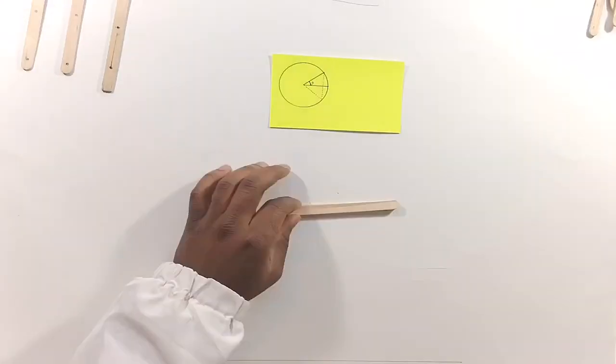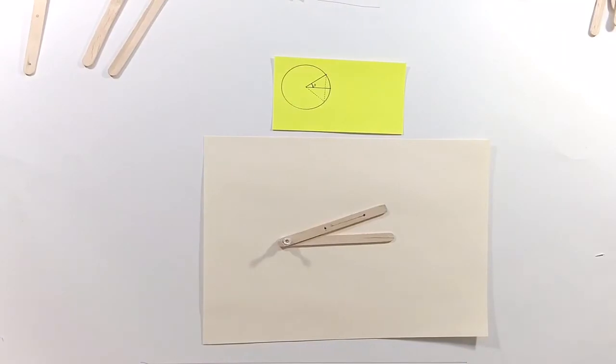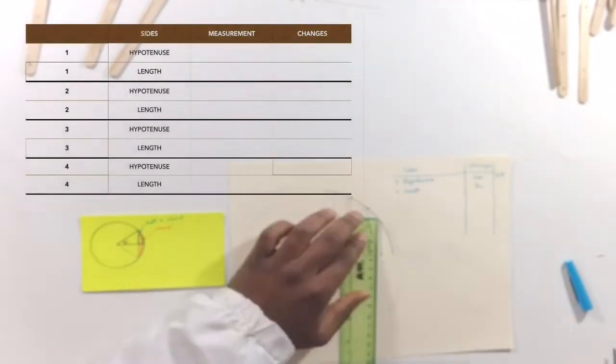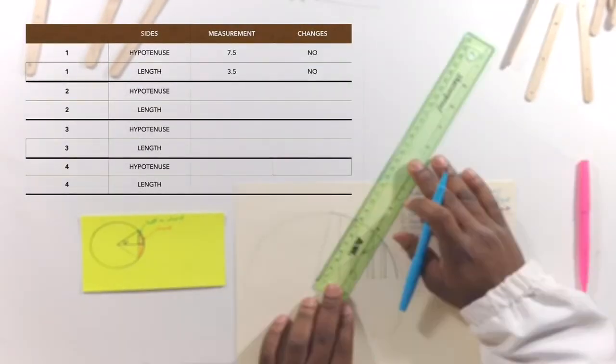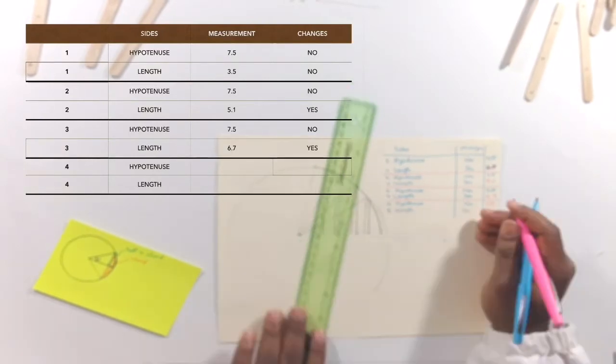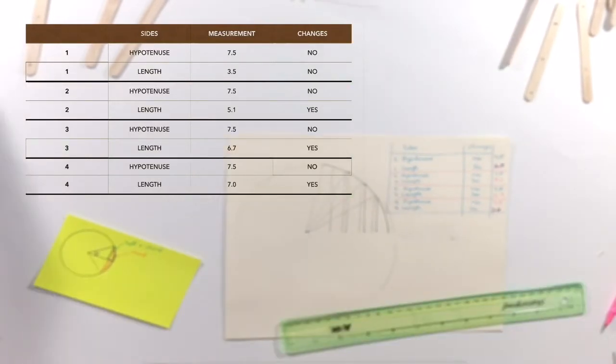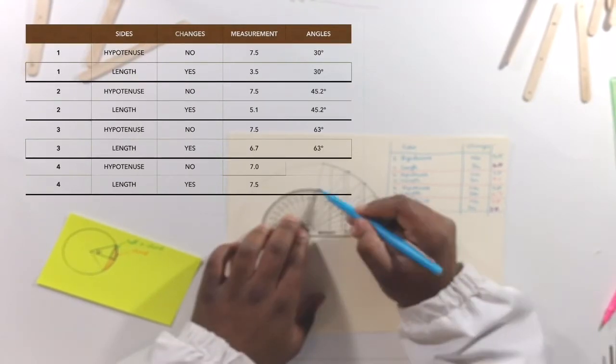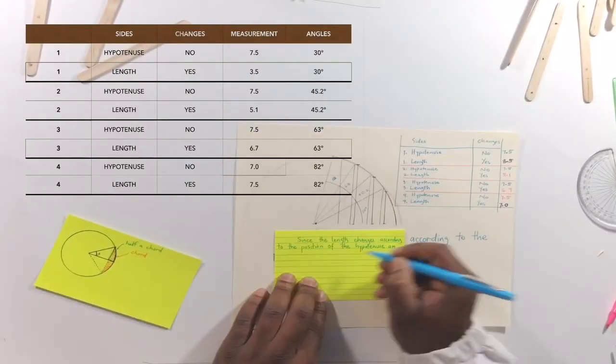The first one, we see that the angle made by the hypotenuse changes the length of the triangle. Notice that the hypotenuse does not change and is the radius of the circle. Since the length is opposite to the angle, the angle of the radius is the same as the change in the length and the hypotenuse. Therefore, the length is proportional to the hypotenuse.